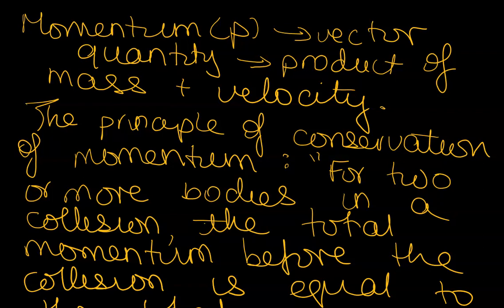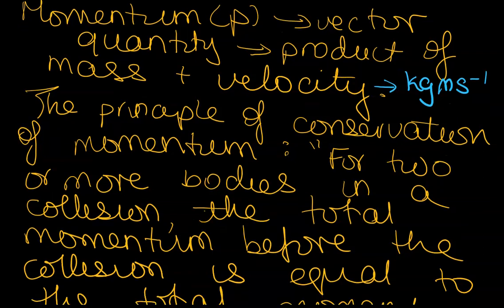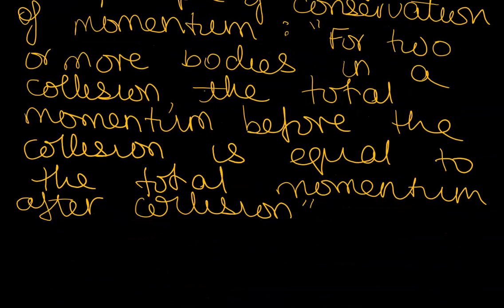Therefore you will find that one of the units for momentum will be kilogram meter per second. Now the principle of conservation of momentum states that for two or more bodies in a collision, the total momentum before the collision is equal to the total momentum after the collision. So basically momentum is used whenever you have two or more bodies involved in a collision. Now a collision could be elastic or it could be inelastic.